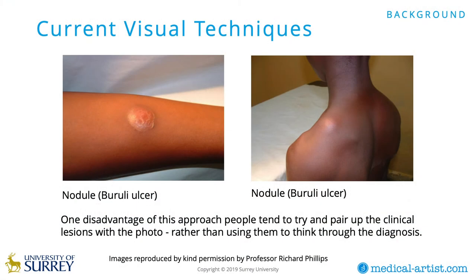So what can illustration provide when we already have photography? The medium of photography is not perfect. Photos are susceptible to varying lighting; the detail of lesions is not always clear; they can flatten the detail. Patients are not always available to photograph. Angles vary from one photo to another, and photos can have distracting backgrounds. Also, with a photo, a disadvantage is that people tend to try and pair up the clinical lesions with the photo rather than using them to link through the diagnosis.